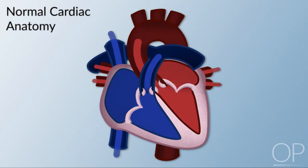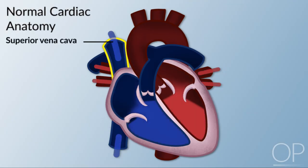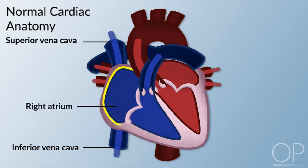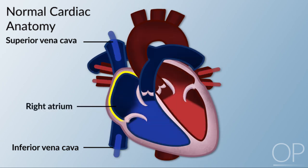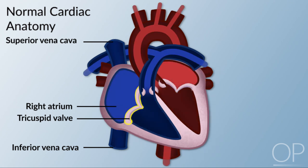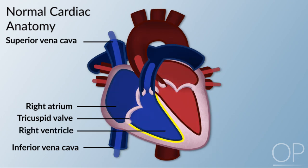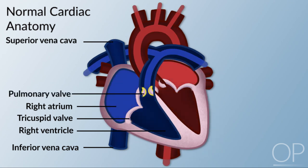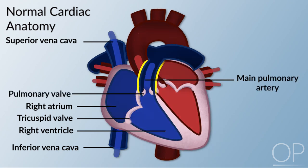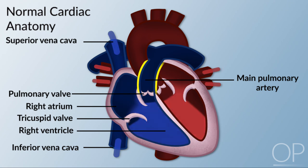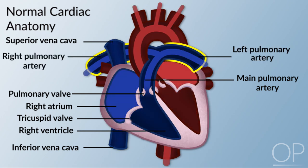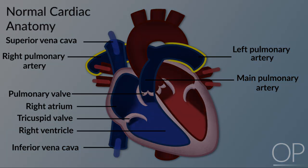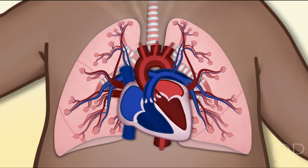The right side of the heart receives venous blood from the body through the superior and inferior vena cava, which enter the right atrium. Blood flows through the tricuspid valve into the right ventricle. Blood leaves the right ventricle through the pulmonary valve into the main pulmonary artery, which divides into right and left pulmonary arteries to transport deoxygenated blood to the right and left lungs.